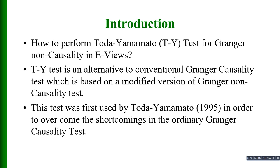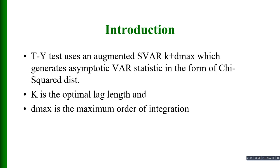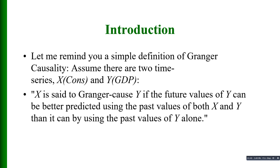The Toda-Yamamoto test is an alternative to the ordinary Granger causality test, based on a modified version of the Granger non-causality test. This test was first used by Toda and Yamamoto in their 1995 paper in order to overcome the shortcomings in the conventional Granger causality test. The TY test uses an augmented VAR of order k plus d-max, which generates asymptotic Wald statistics in the form of a chi-square distribution, where k is the optimal lag length and d-max is the maximum order of integration.